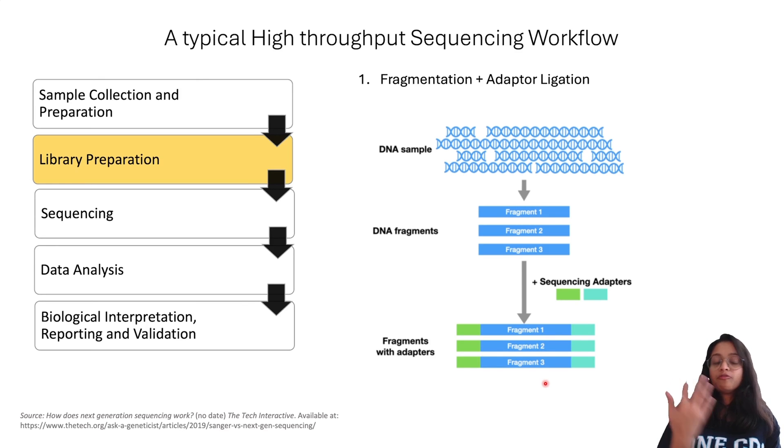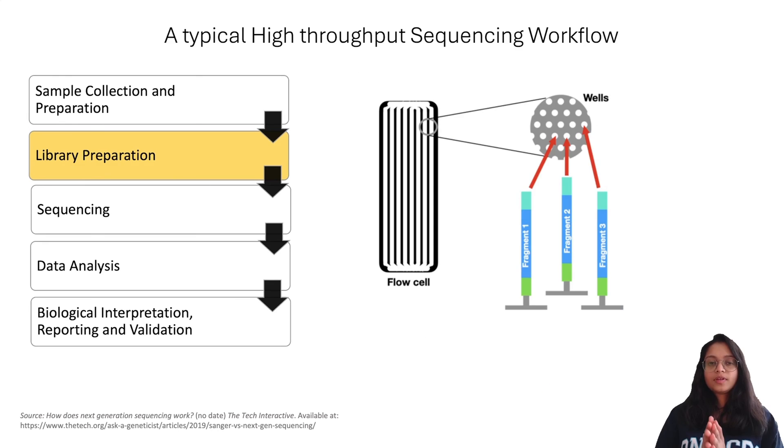The sequencing platform could be a flow cell when using Illumina or beads when using Ion Torrent. Instead of running the DNA sequencing reaction in a tube, the DNA is loaded onto the flow cell. Illumina uses the sequencing flow cell as the sequencing platform, so the entire sequencing occurs on the flow cell. The flow cell is a chip which has lanes, and these lanes have sets of wells.